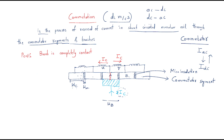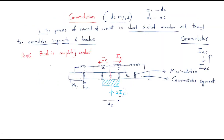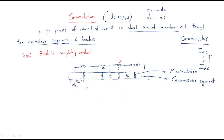Now, if the brush is in position A (first position), the current will flow as IC and IC through the two paths. The second position is when the brush is equally in contact with both segment A and segment B. We need to discuss what happens in that case. If the brush is equally contacting both segment A and segment B, let's look at the current behavior.